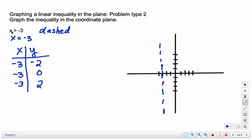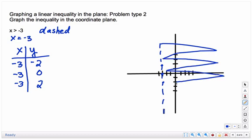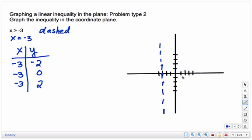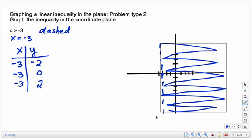And then I read this x is greater than. X values are greater than or to the right of the line. So I shade that region. Basically your solution is anything in this shaded region and not on the line. The line is a boundary.